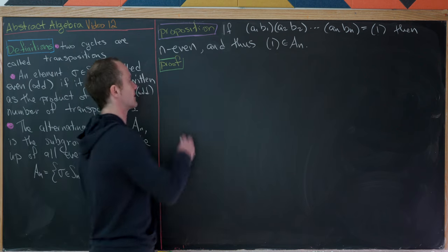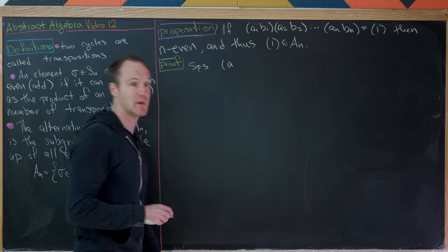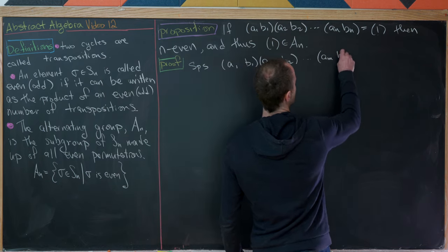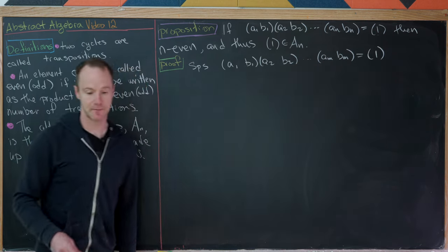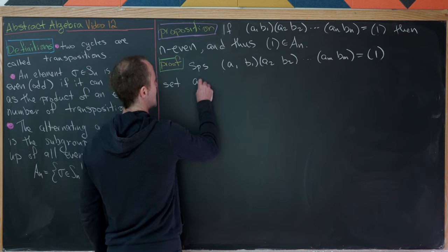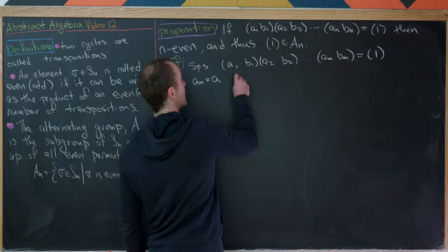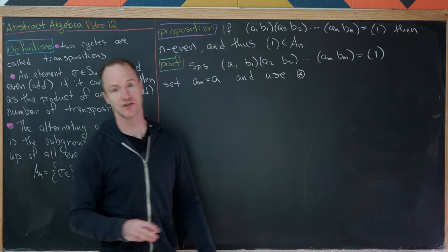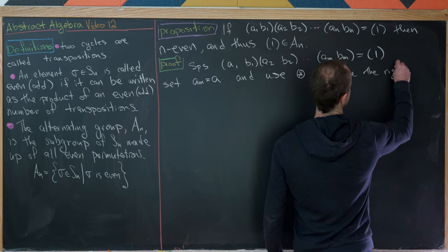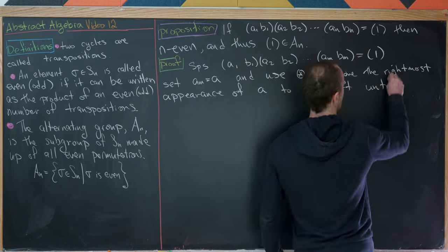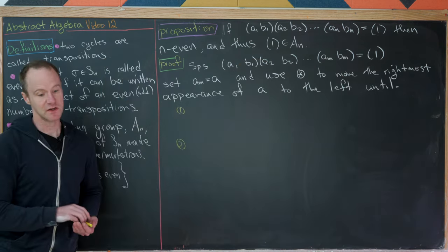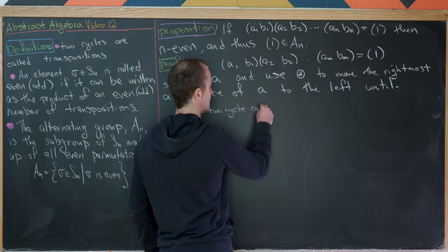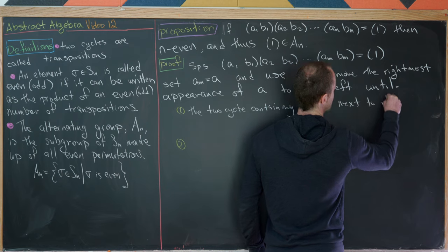Now let's put those parts together. Suppose we have M two-cycles — (A1,B1)(A2,B2)···(AM,BM) equal to the identity. Let A = AM, and use those previous calculations (marked with *) to move the rightmost appearance of A to the left until one of two things happens.